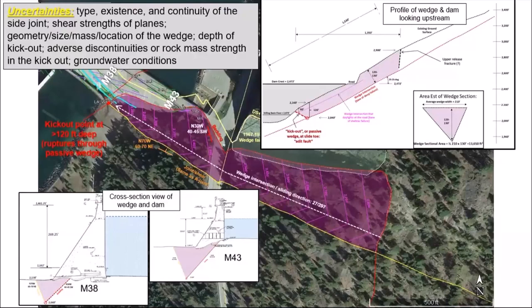This is a cleaner version showing the results of compiling all that outcrop pattern mapping. Here's the conceptual wedge we developed in the quantitative risk assessment. You can see taking into consideration we've already lost part of this wedge from that construction failure, and then visualizing and being able to show this because it's very complicated. We have a monolith shown here - for reference, monolith 47 is the last monolith up here. Going down you can see 38 and 43, and those are what these sections are showing here - what we're undermining on each monolith for the wedge. Here's just a profile looking upstream at that wedge and where that kick-out point is.